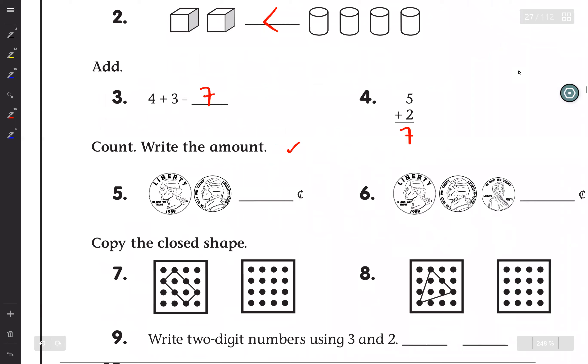Count and write the amount. Number 5, it's one quarter. One quarter equals 25 cents, and this is one penny. So yes, 26 cents. And number 6, here is one quarter, it is one nickel, and this is